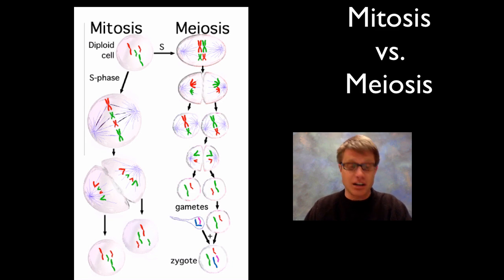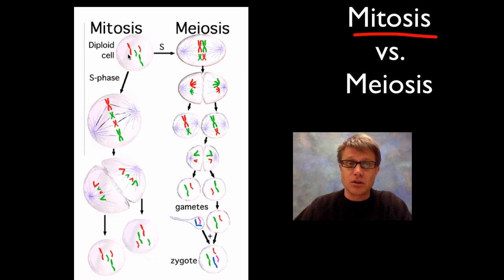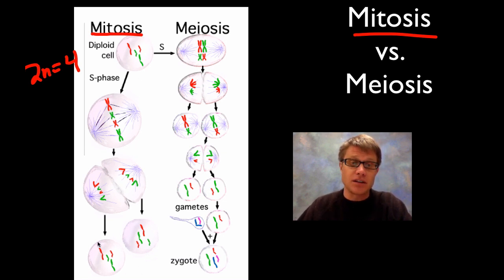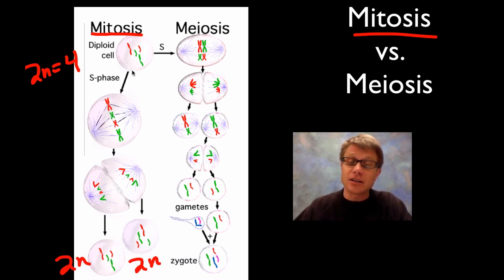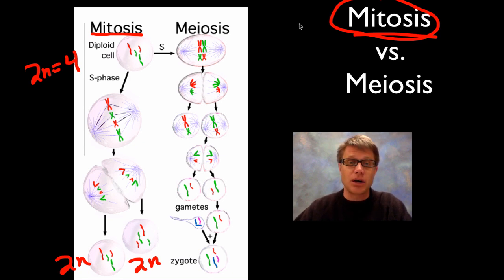First, let's talk about what mitosis and meiosis are. Mitosis is basically equal division of the nucleus. Let's say we have a typical diploid cell — in us we'd have 46 chromosomes, but in this example they have 2n equals 4. In mitosis, we duplicate the DNA, they line up in the middle during metaphase, they pull apart during anaphase, and then we have 2 cells at the end that are both diploid and identical to the first cell. Mitosis is how we produce identical cells — that's how you went from one cell to the trillions of cells in your body.